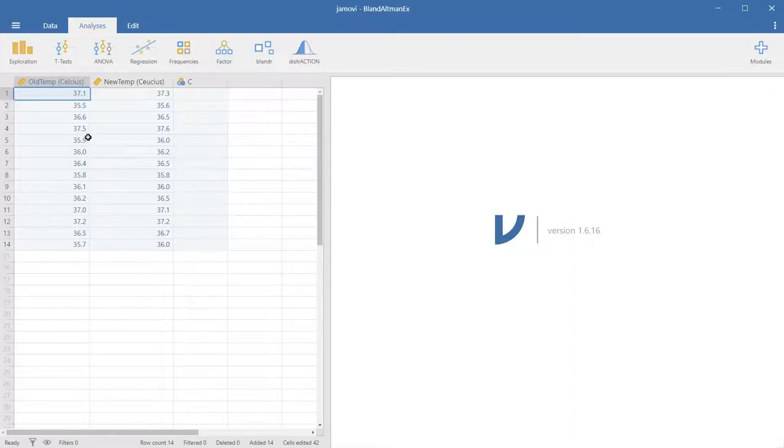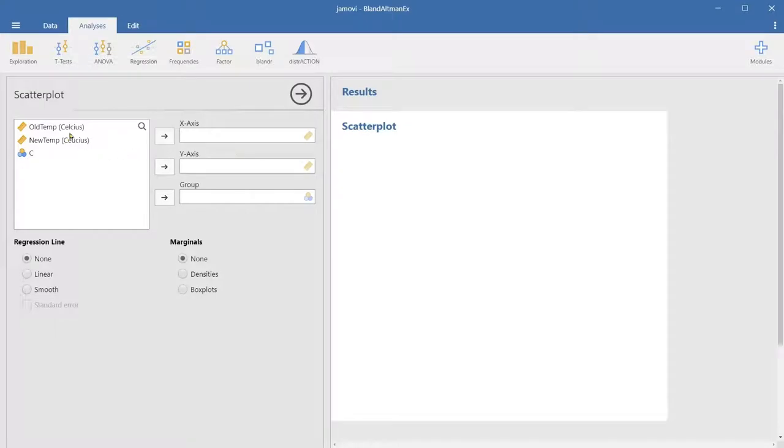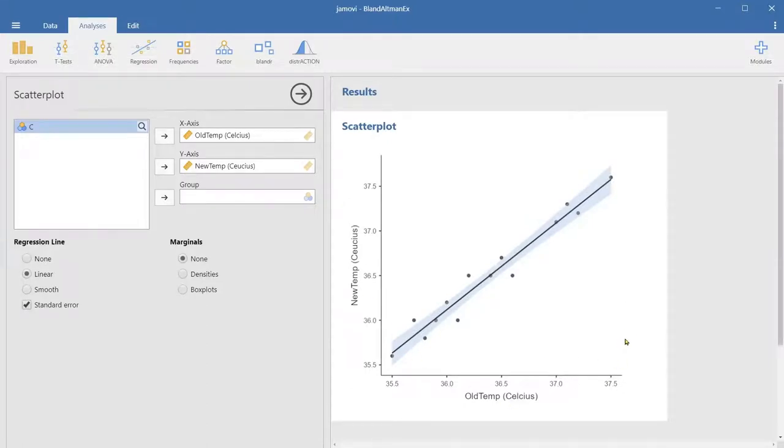Here are the temperature data. The first column represents the temperature measurement from the old method, and the second column represents the measurement from the new method. Let's make a scatterplot. The old temperature should go to x-axis and new temperature go to y-axis. Let's add a linear regression line and see what it looks like. This is the scatterplot between the old and new temperatures, and it looks like there's quite a strong relationship between the two measurements.